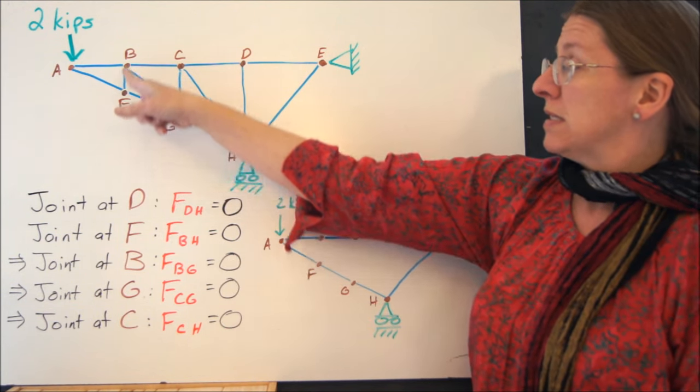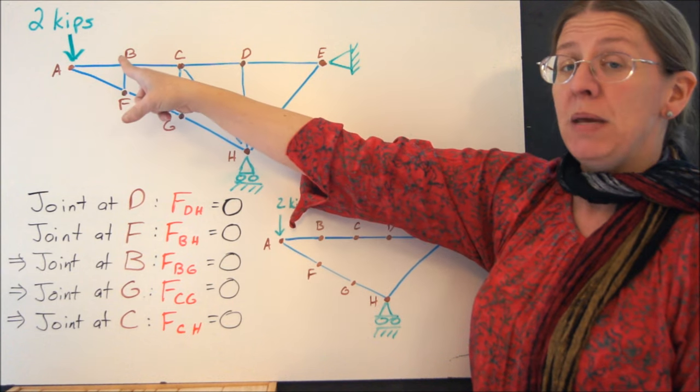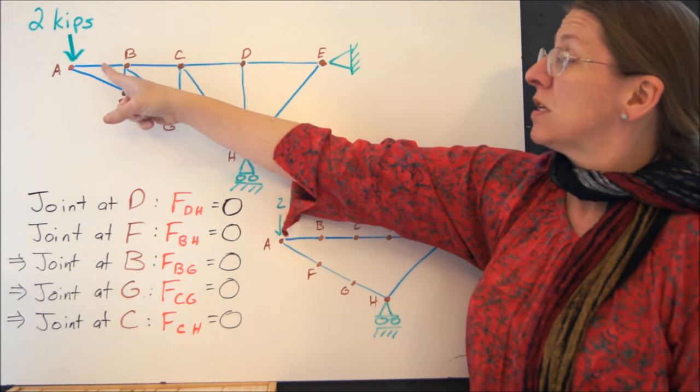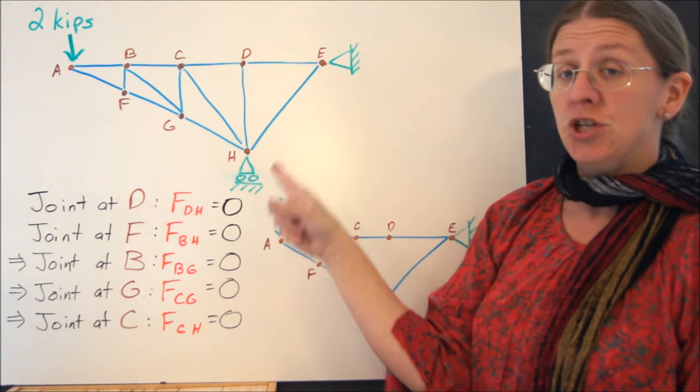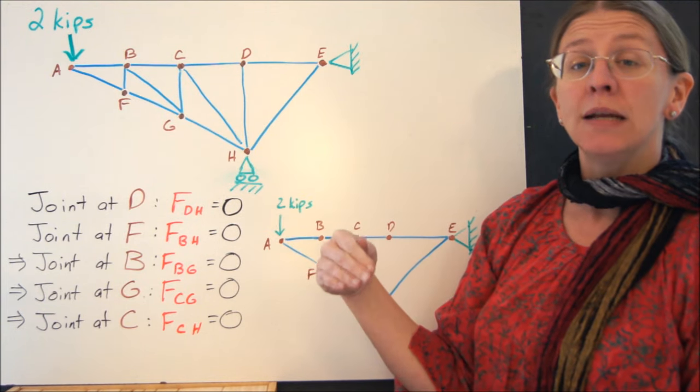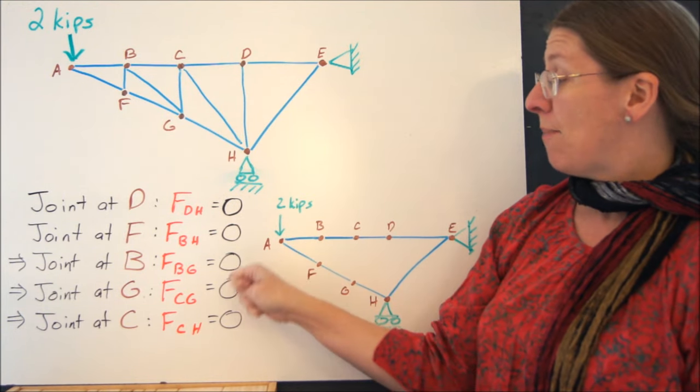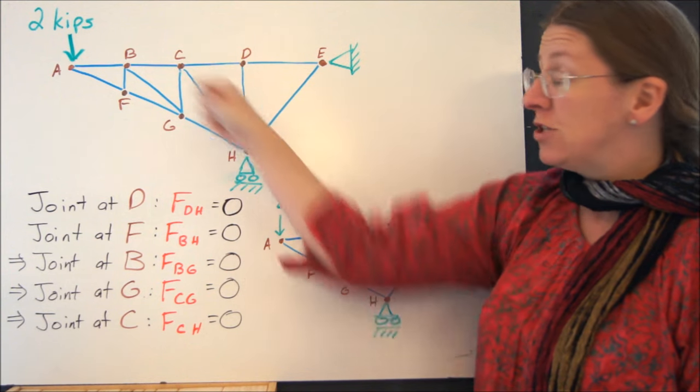Once you have this one as zero, look at the joint at B. Now the joint at B only includes AB, BC, and BG. Again, two of them are lined up and one of them isn't. So at that point, what you can say is that BG has to be zero.